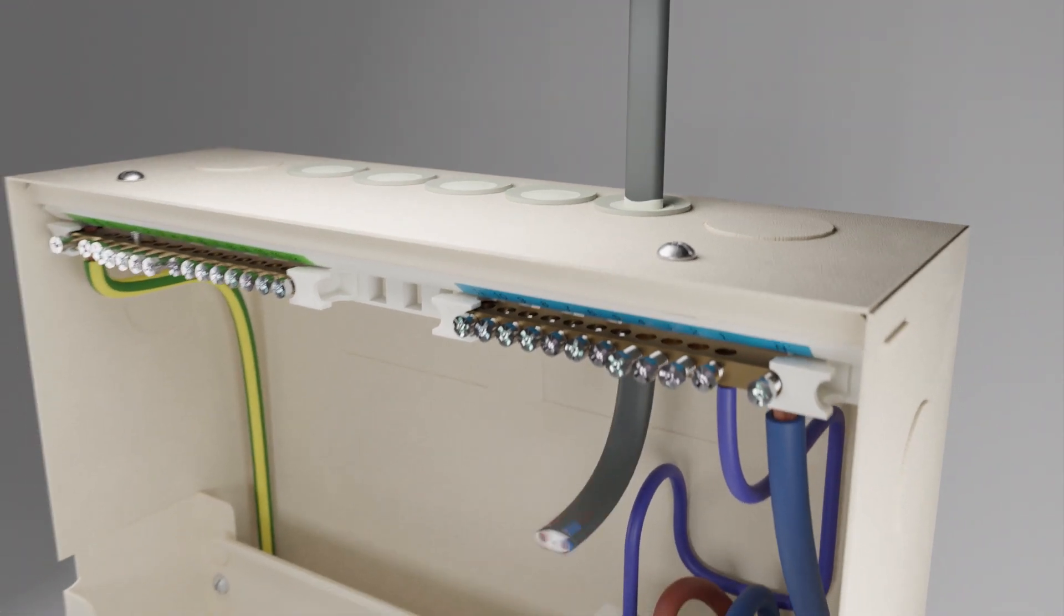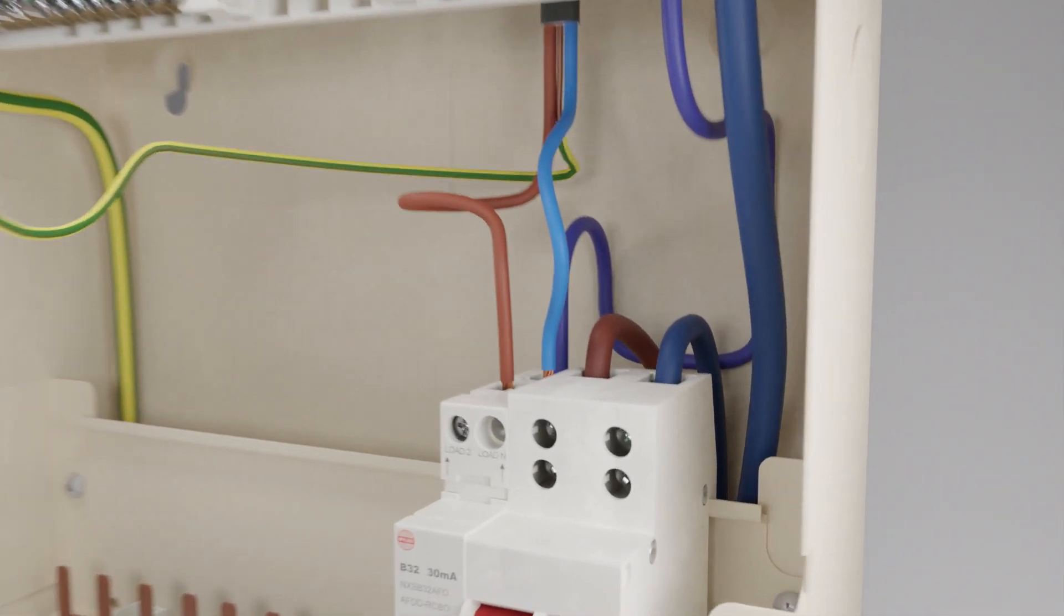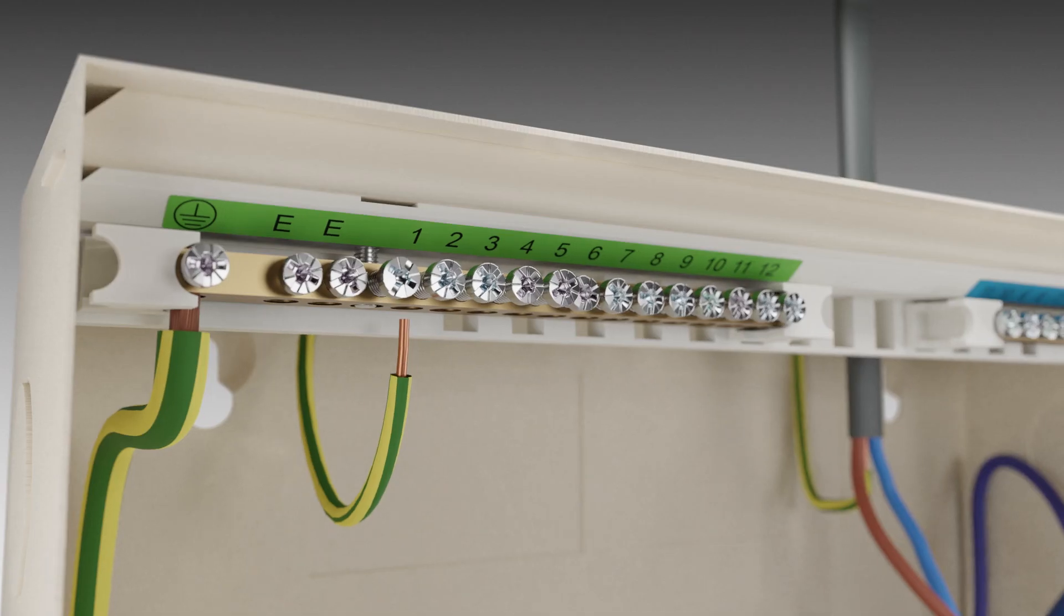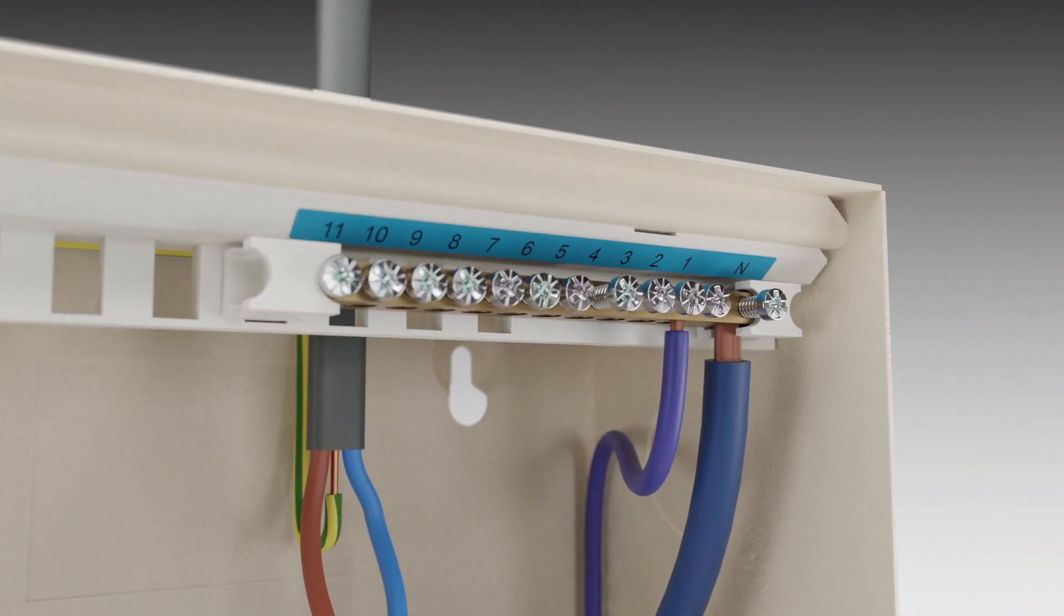Wilex AFDDs are two-pole switching, so both live and neutral outgoing circuit cables must be connected to the device and the neutral input lead must be connected to the appropriate terminals on the terminal bar of the consumer unit.